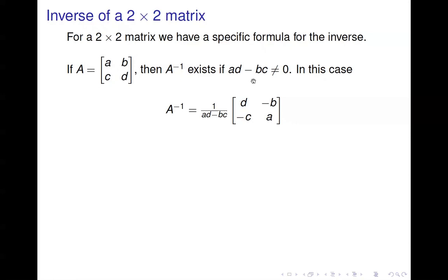I call it the crisscross applesauce: A times D minus B times C. So if that's not 0, A inverse exists, and here's a formula for it. Notice that we divide by AD minus BC — that's why it has to be non-zero. The matrix is formed from A by swapping the numbers in the A and D positions, and negating B and C.